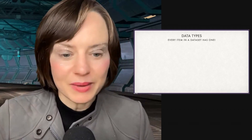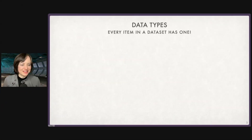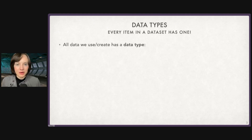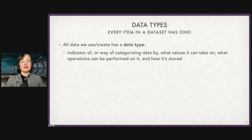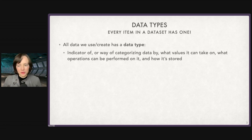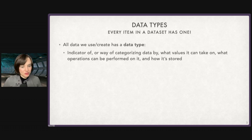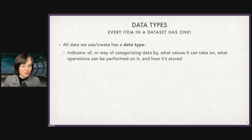The first thing I want to talk about are data types. Every time you import a dataset into your program, every item in that dataset is going to have a type. It's very important to know what type of data you have, and to know whether we might need to change it to another type. A data type is a way of categorizing data — an indicator of what values our data can take on, what operations we can perform on it, and how it's stored.